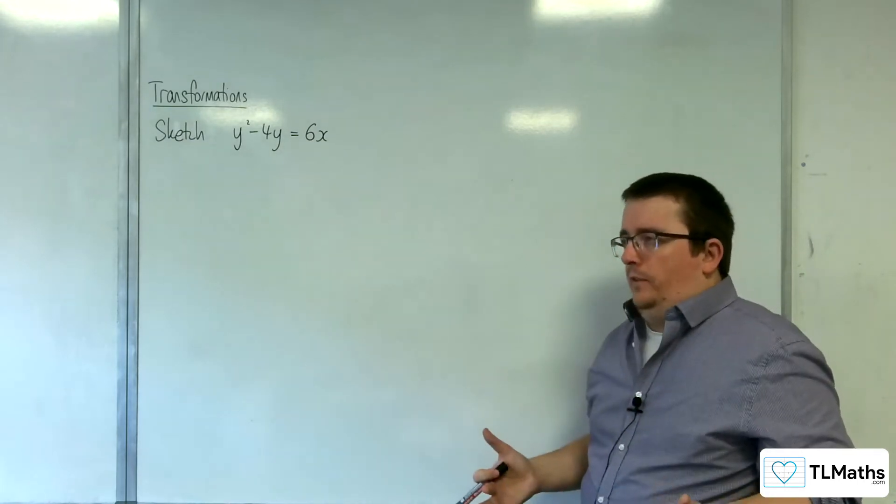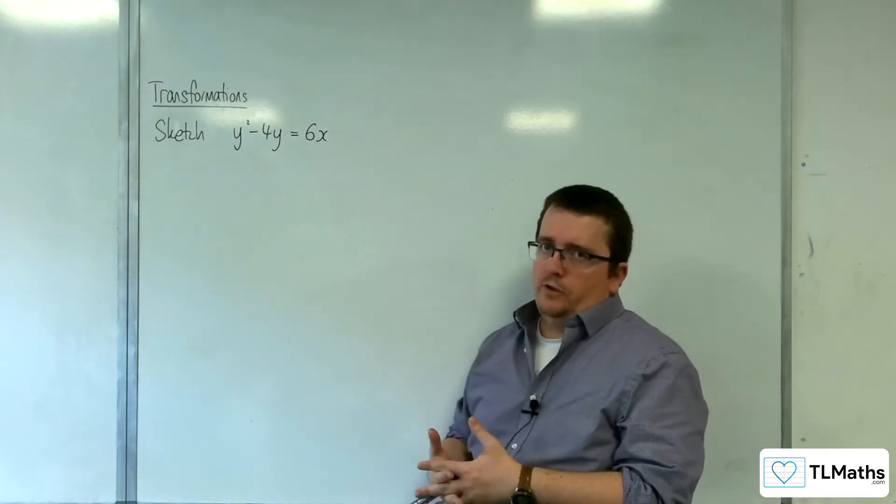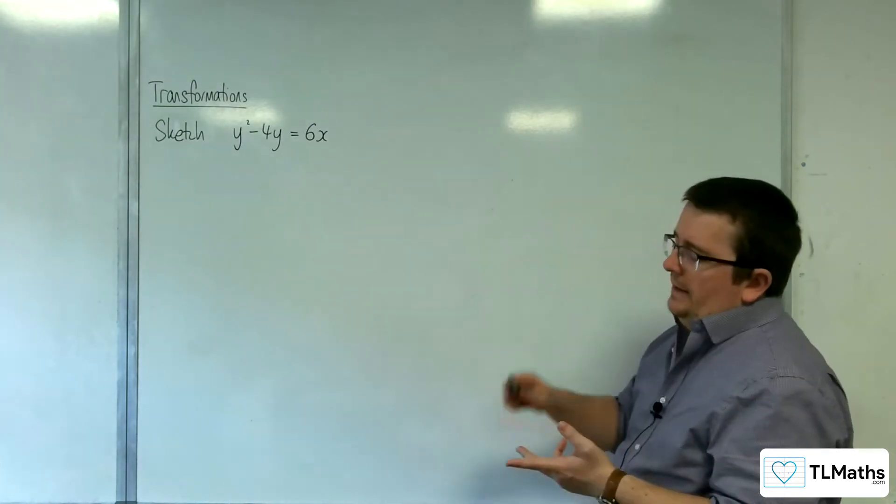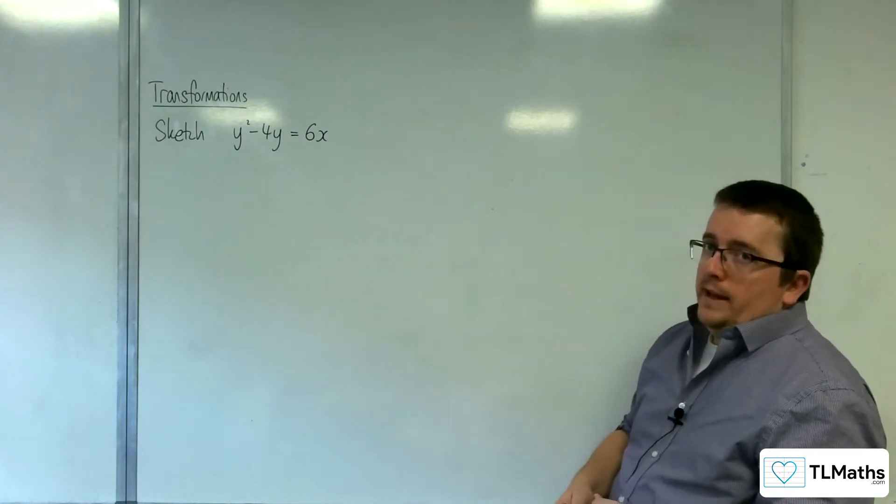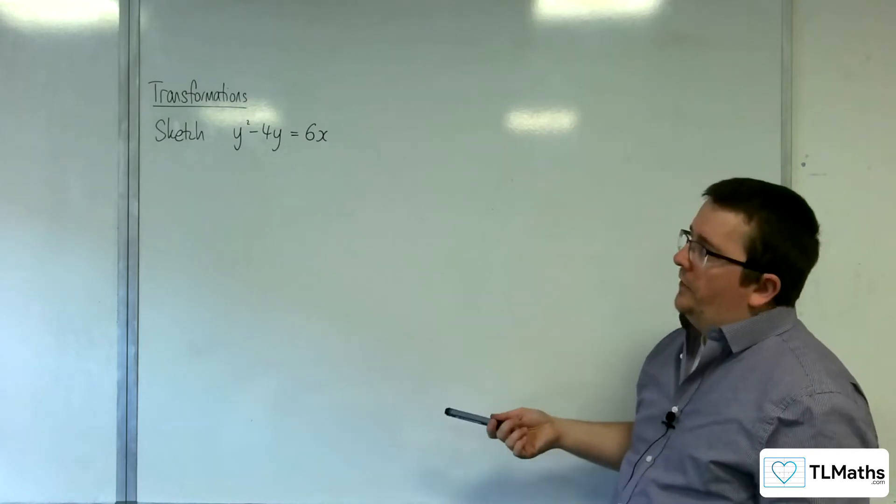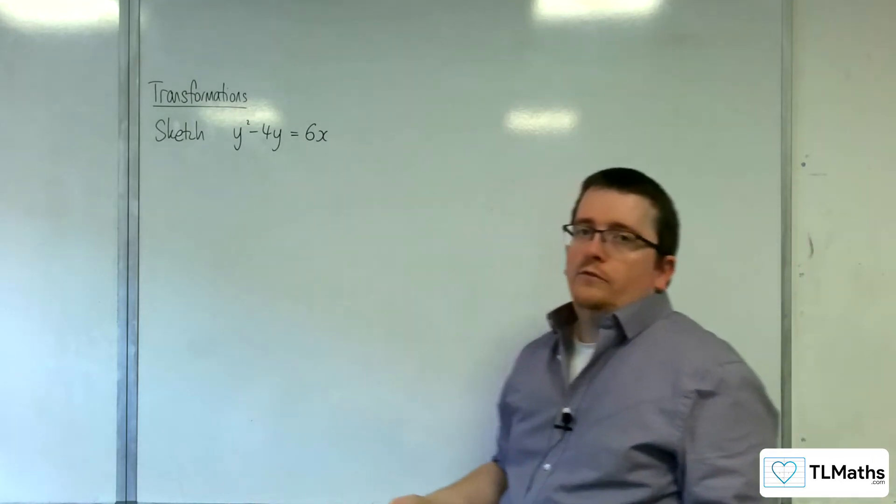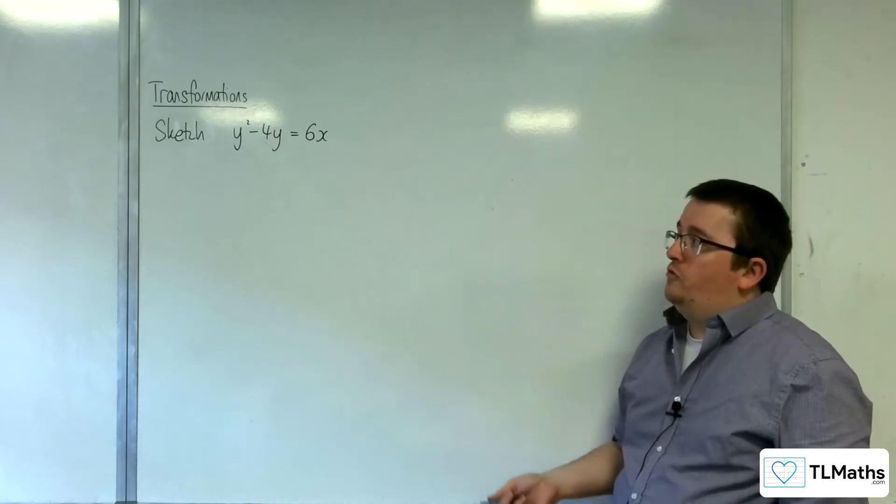We should be looking at these in general and going, right, what type of curve am I considering? Is it a parabola? Is it an ellipse? Is it a hyperbola? Now, of those three, this is a parabola. Okay, now you can recognise that by the fact that we don't have an x squared involved. That's required for both the ellipse and the hyperbola. So we know it's a parabola.